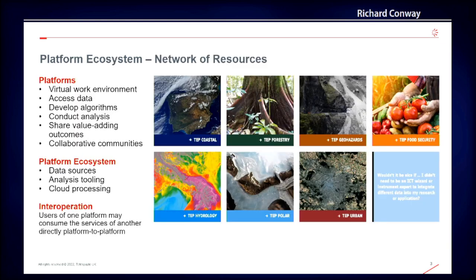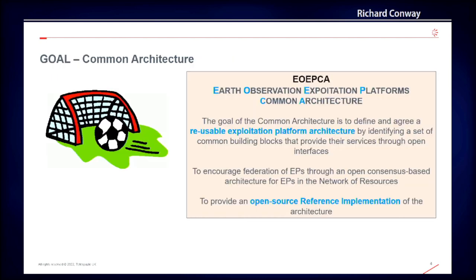We now have a complementary ecosystem of platforms, data sources, and cloud services. To fully exploit the potential of these complementary resources, we anticipate the need to encourage interoperation amongst the platforms, such that users of one platform may consume the services of another directly, platform to platform. In response, we have defined a reusable architecture that delivers platform services through open standard interfaces to encourage interoperation and federation within this network of resources.